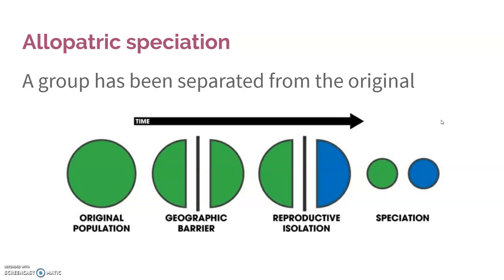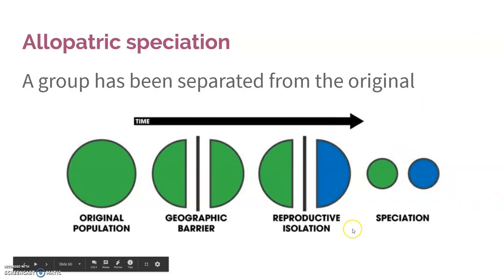Allopatric speciation is when you get some sort of geographic barrier — a canyon formed, an earthquake split some land, Pangea floated apart, whatever. That creates a geographical barrier so they physically cannot get to the other side. Over time, reproductive isolation occurs, and even if you were to take members of one side to the other and say 'have babies,' they can't — they're not the same species anymore. They have undergone speciation.